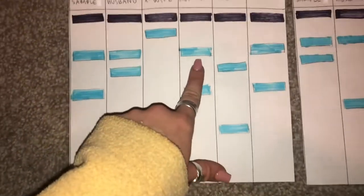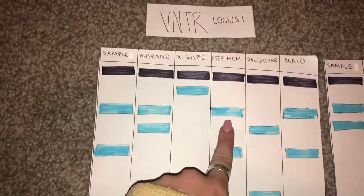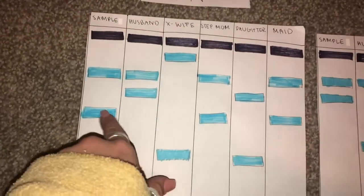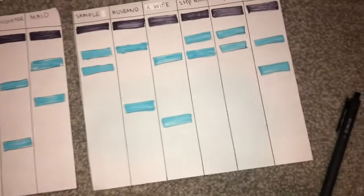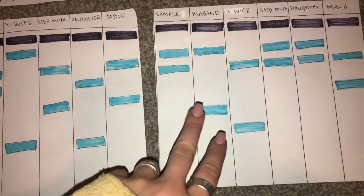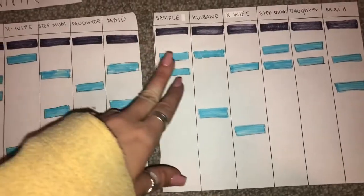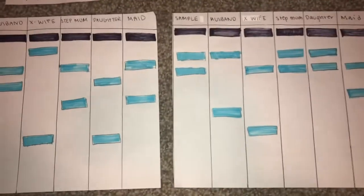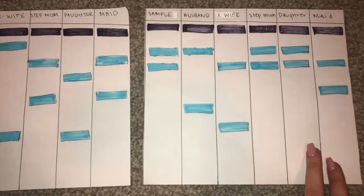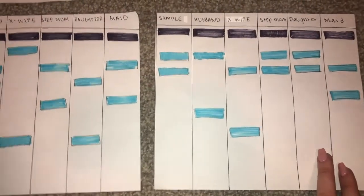Now we can take a look at the stepmom. At VNTR 1 she matches both DNA of the sample and at VNTR 2 she also matches. Her DNA fully matches the samples at both loci. We're not going to accept her as the criminal just yet because we have two more suspects to look at.